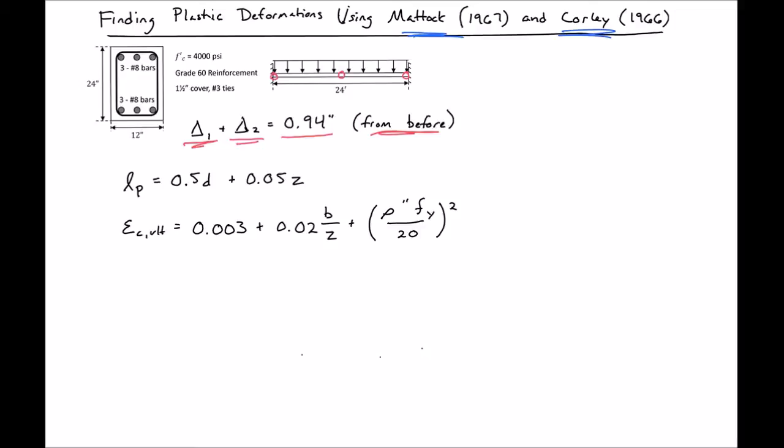The only difference when finding our plastic deformations now using Matic and Corley is we have a different expression for our plastic hinge length LP. Remember before we just used half D, so our hinge length gets a little longer depending on our moment gradient C. We also have a different expression for our strain at ultimate for our concrete. Before we just had 0.003 for our ACI approach. Now we have some additional terms based on our base width and our moment gradient and the area of our compression steel.